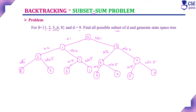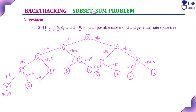Next, consider the fourth element 6. Adding 6 to 8 gives 14, which is greater than 9, so no need to proceed. Without 6, the value is 8. Adding 6 to 3 gives 9 — this is a solution. Without 6, the value is 3. Adding 6 to 6 gives 12, which is greater than 9, so no need to proceed. Without 6, the value is 6.